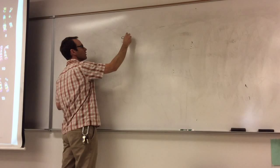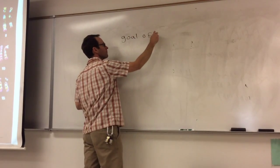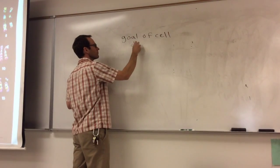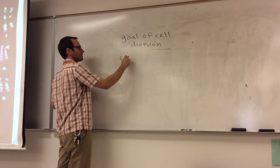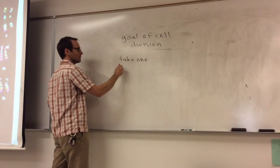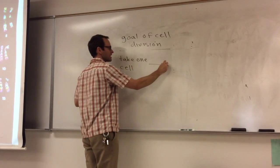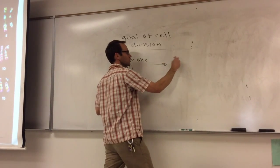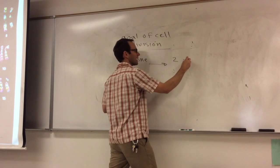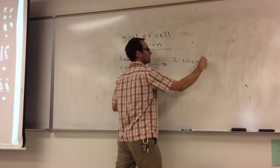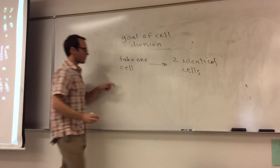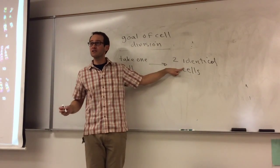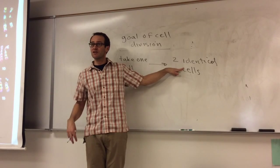So the goal of cell division is to take one cell and make from it two identical cells. So we want to take one cell and basically clone it to make two identical cells.